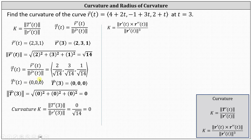Applying the curvature formula, we have the curvature equals the magnitude of T prime of 3 divided by the magnitude of r prime of 3. The magnitude of T prime of 3 is zero, and the magnitude of r prime of 3 equals square root of 14, which indicates the curvature is equal to zero. This shouldn't be too surprising — notice each of the components of r of t is linear, and therefore the graph of r of t is a line in space.